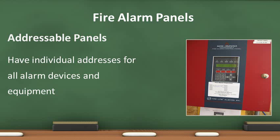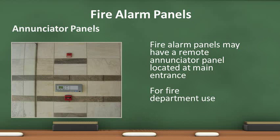Addressable panels have individual addresses for all the devices and equipment. The type of equipment and where in the building it is located will be indicated on the panel. Another type of fire alarm panel is called an enunciator panel. It is remotely located from the main fire alarm panel and is for fire department use. This type of panel is normally found at the main entrance to a building for easy access.